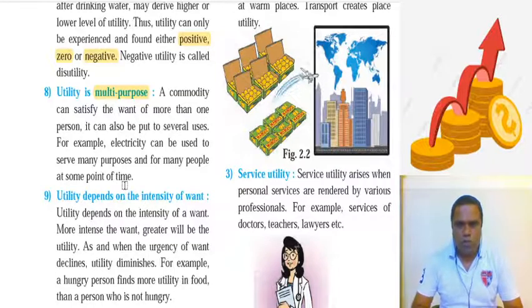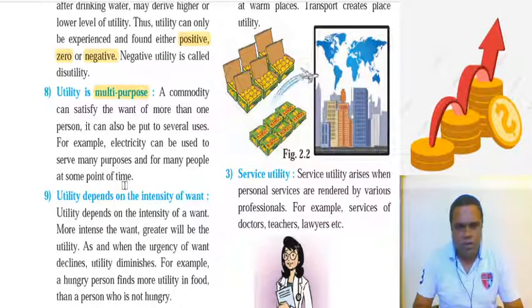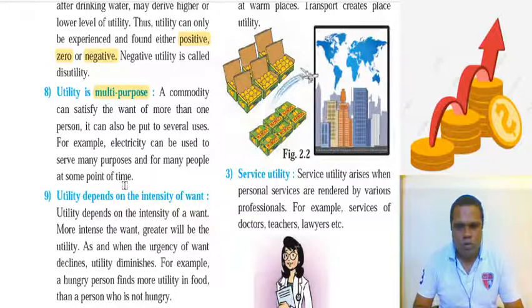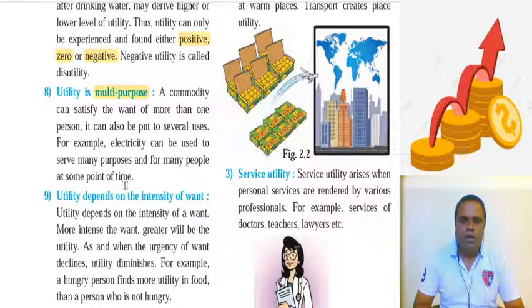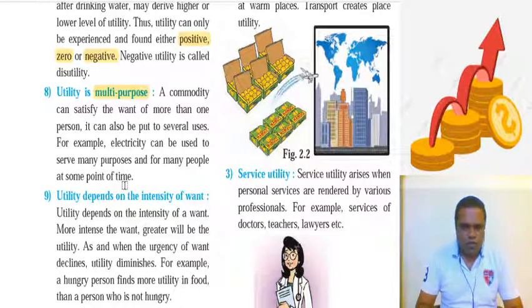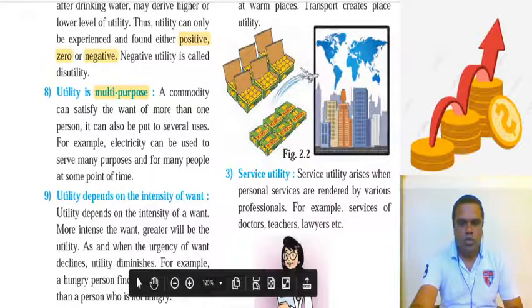So with these nine points, if you remember them well, your answer on characteristics of utility is ready. That's all for today — we will meet in another lecture with more interesting examples, and we will cover the types of utility and then move towards the law of Diminishing Marginal Utility. Till then, thank you very much, bye everyone, take care, be safe.